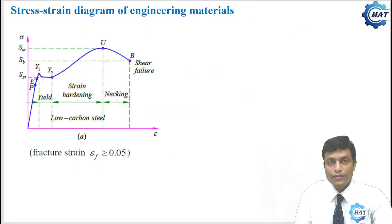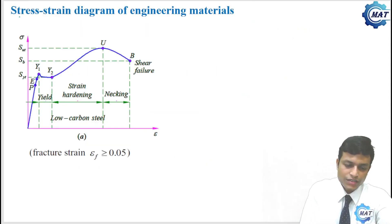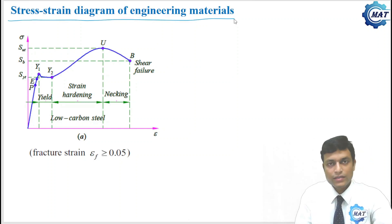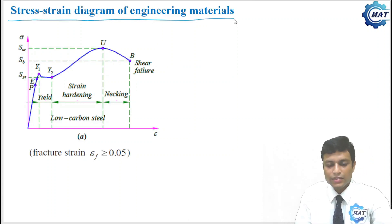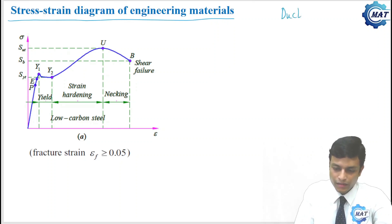Let us come to a very important topic: the stress-strain diagram of engineering materials. Engineering materials can be broadly divided into two groups — ductile materials and brittle materials.